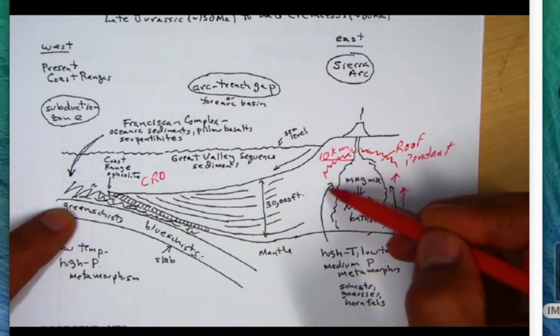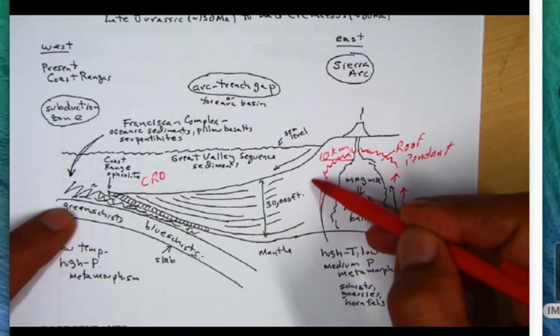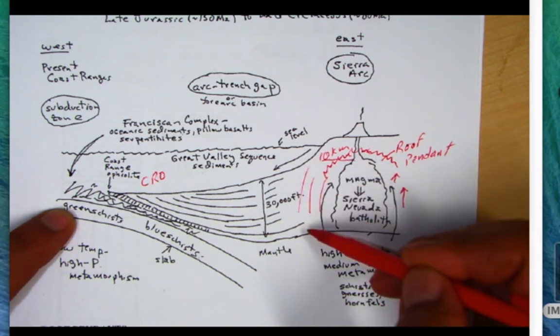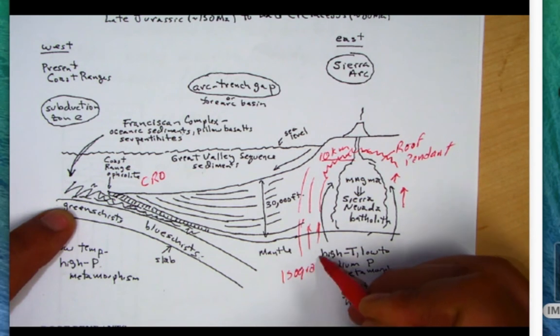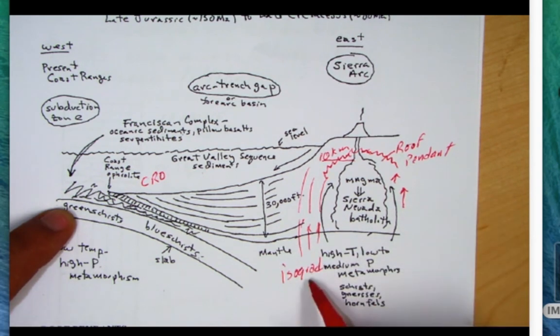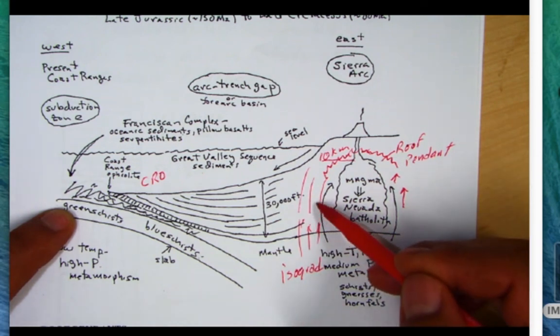As you're going away from this batholith, we often call these lines that I'm drawing isograds—isograd which means same temperature, like same grade. As you're closer to the heat source you're higher grade, as you're farther away you're lower grade, so there's a variety of grades.